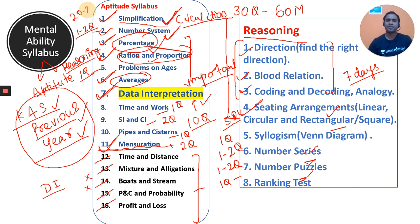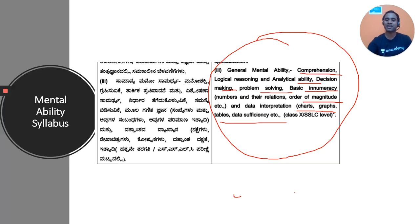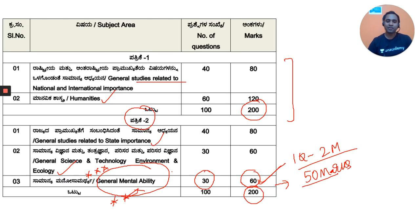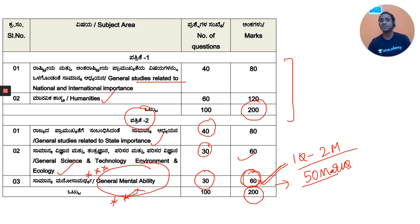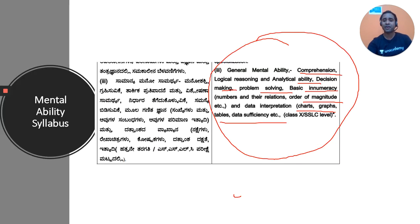Aptitude preparation will take 20–25 days, so basically one month of training is more than sufficient for your mental ability. You cannot leave this section — 30 questions for 60 marks is significant weightage. Compare this with science and technology at 30 questions for 60 marks and general studies at 40 questions for 80 marks — you simply cannot ignore mental ability.